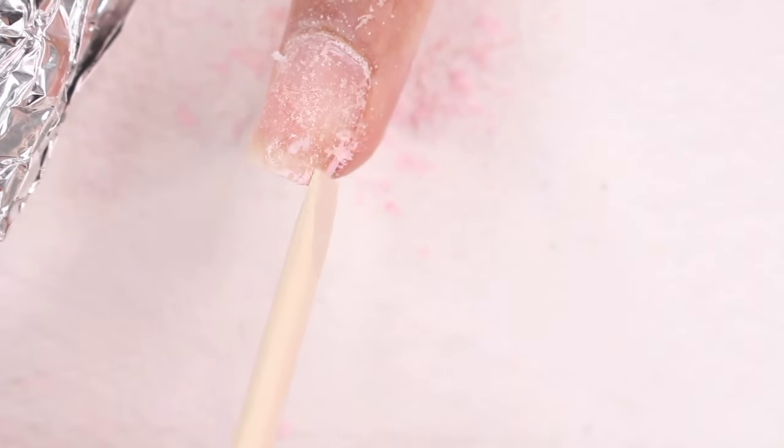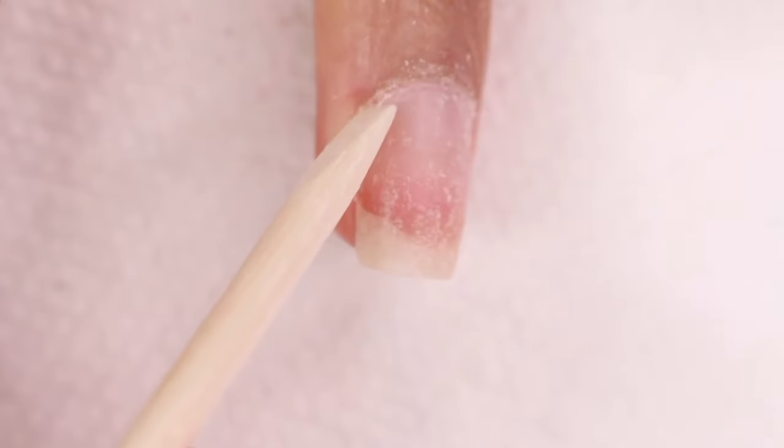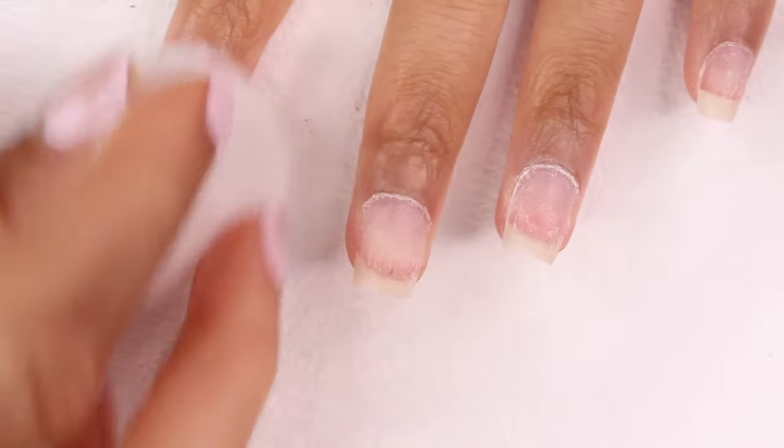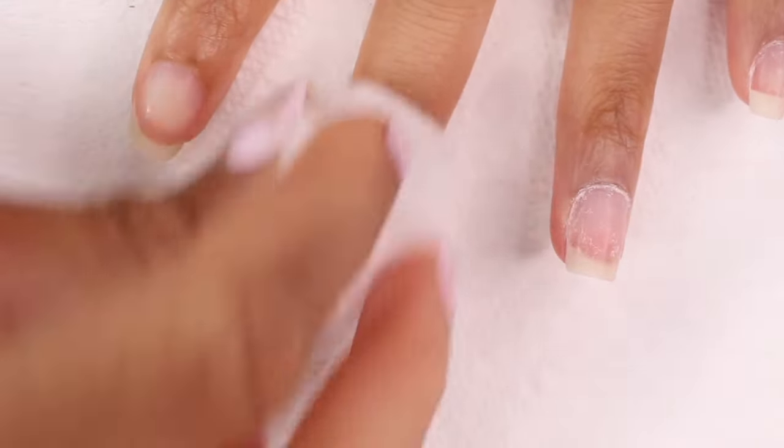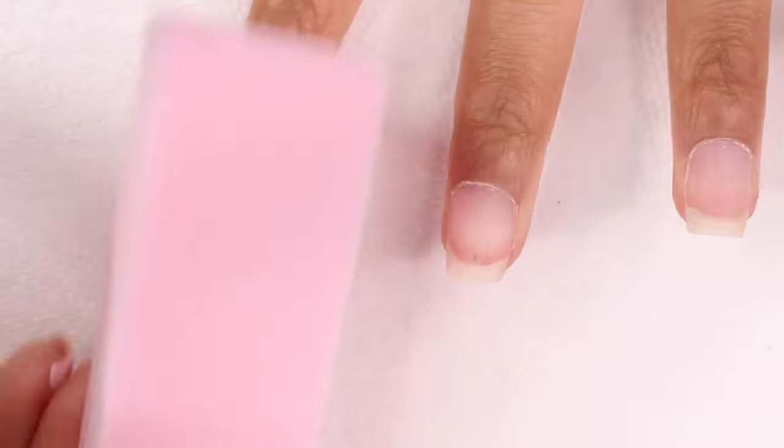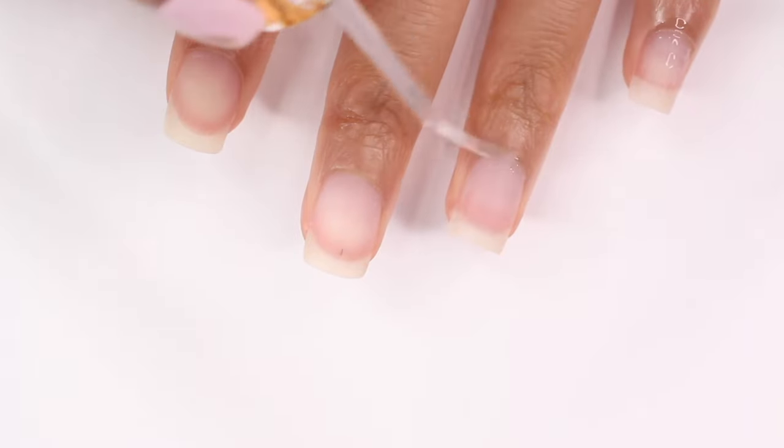Once the gel is completely gone, I like to take a cotton ball and acetone and just run over my nails. And then I also like to use a buffing block and just give each nail a few swipes. You don't want to over buff your nail, but I like to just even it out a little bit. And then I'll end with washing my hands and applying cuticle oil.